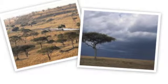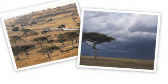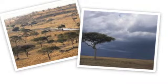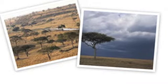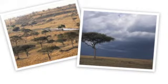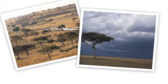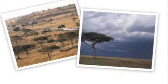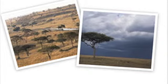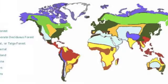The savanna biome has a wet and dry season. In the savanna, the climate is always dry but gets all the rain in the summer months. The savanna climate can range from 68 degrees to 86 degrees Fahrenheit. In the winter, it is usually about 68 to 78 degrees Fahrenheit. In the summer, the temperature ranges from 78 to 86 degrees Fahrenheit. The temperature in the savanna doesn't really change very often.